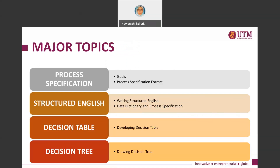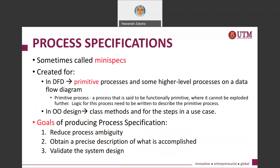This particular video will focus only on the general overview of process specification, while the next three videos will focus on Structured English, Decision Table, and Decision Tree, which are among the methods for representing process specification. A process specification is sometimes referred to as a mini-spec because it is a specification of one small part of a bigger complete specification — it describes one particular process.